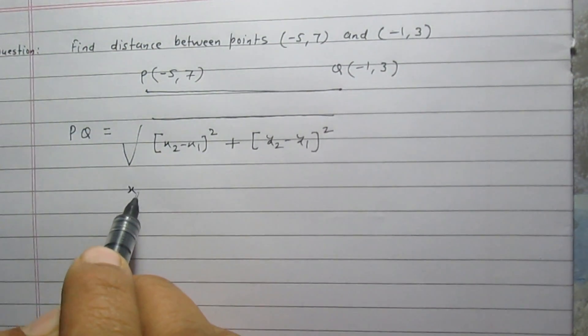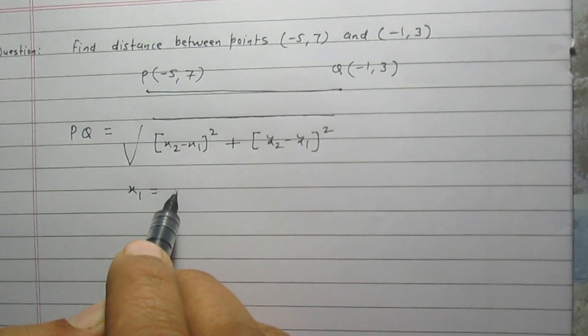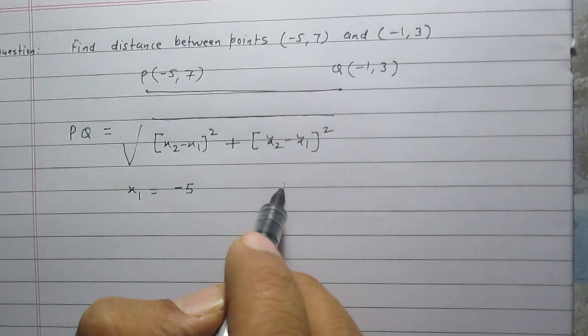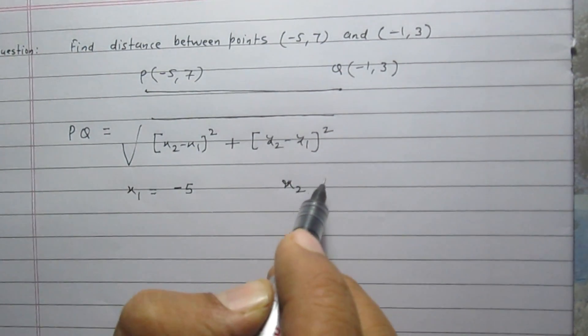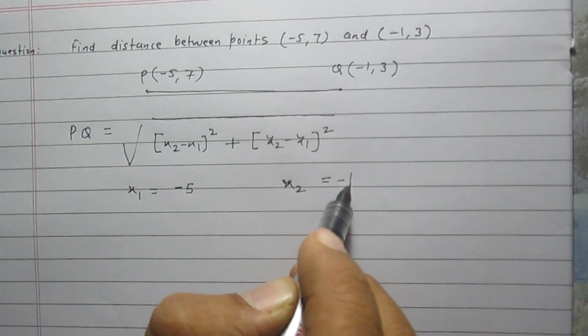Where x₁ is the x-coordinate of first point P, it is -5. x₂ is the x-coordinate of second point Q and it is -1.